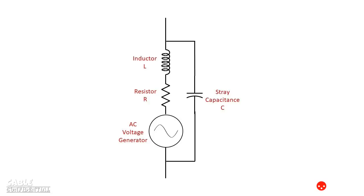The resistor comes from the long length of very thin wire in the pickup. The inductor comes from the coiling of the wire, which is how you make an inductor, and the capacitor comes from the stray capacitance that results from the turns of wire being in close proximity to one another. That capacitance is real, but it doesn't exist as a separate element that we can see. Instead, it's distributed across the turns of wire in the pickup.